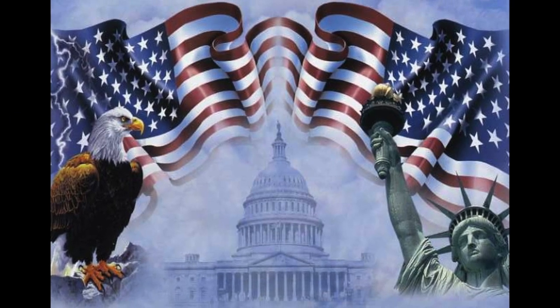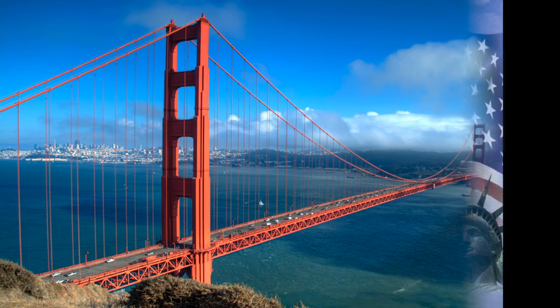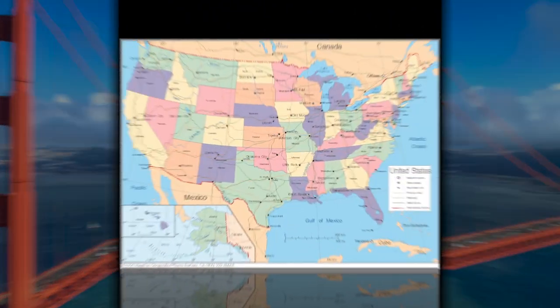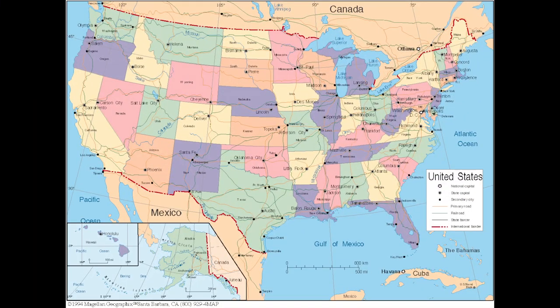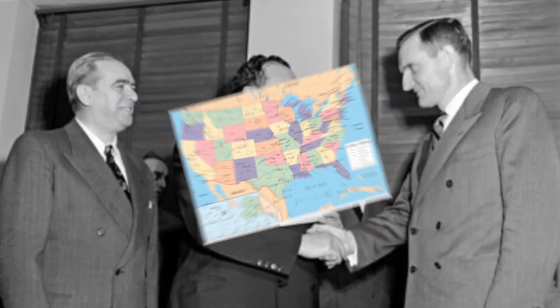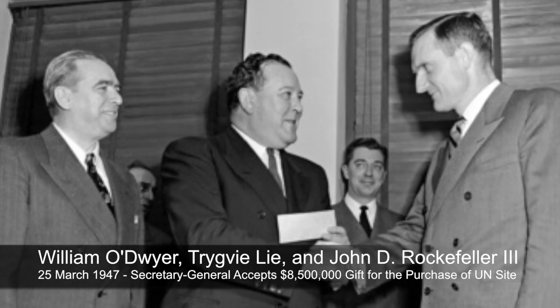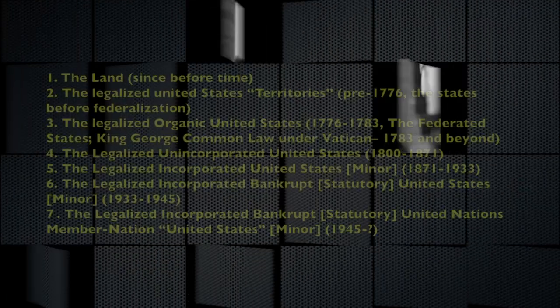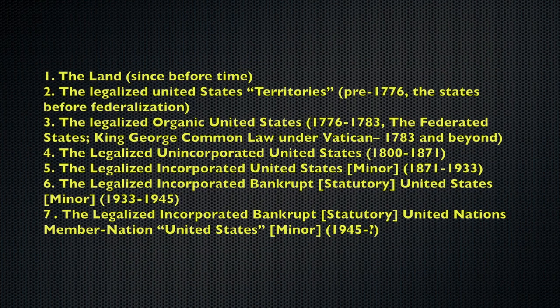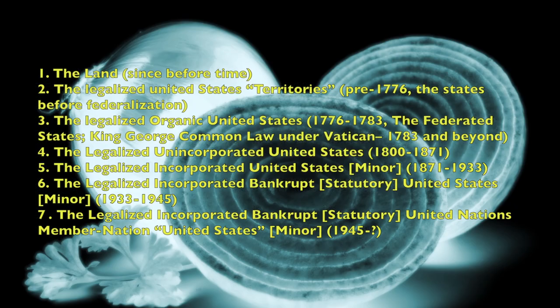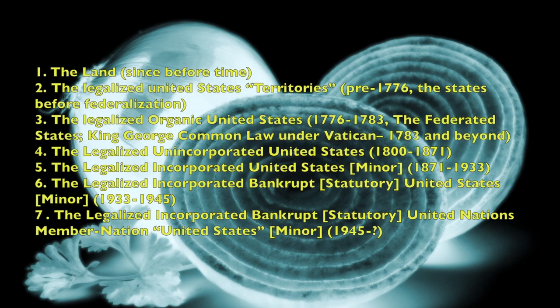When people think of the United States, a common opinion might be of the land or maybe a country. These definitions are outdated by half a century, if not more. There were at least seven different definitions of the United States throughout history, layered like an onion.